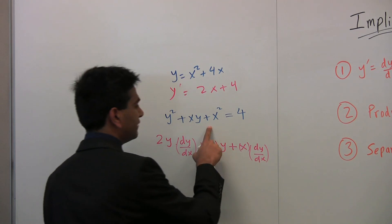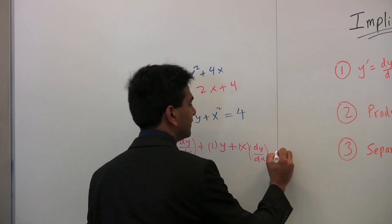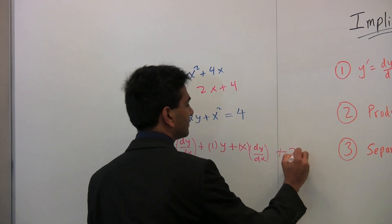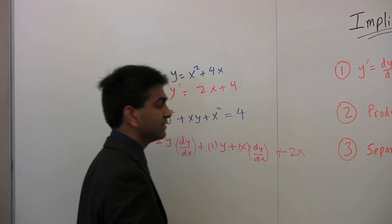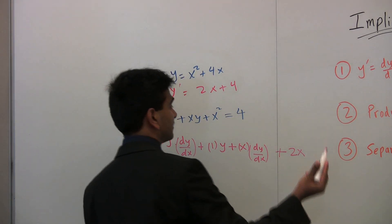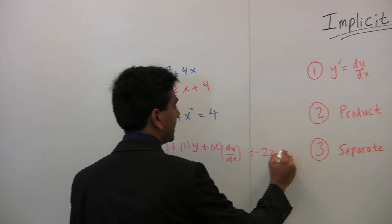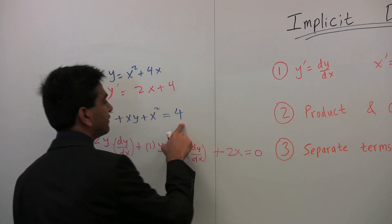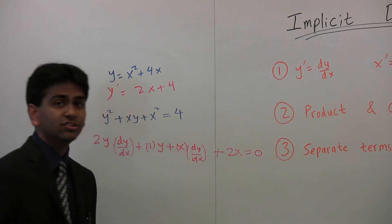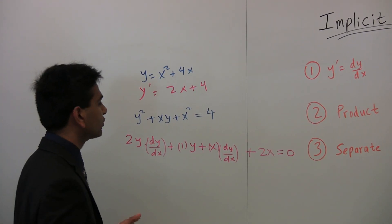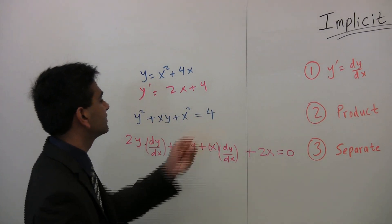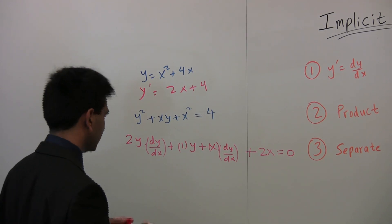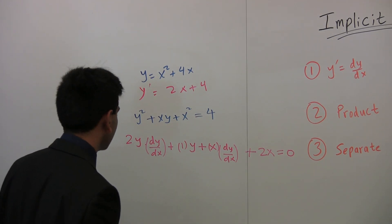Finally, for x squared, the derivative is 2x, and we multiply by the derivative of x, which is just 1. All of that equals 0, because the derivative of 4 is 0. Notice how we're taking the derivative of both sides — that's a very legitimate operation.